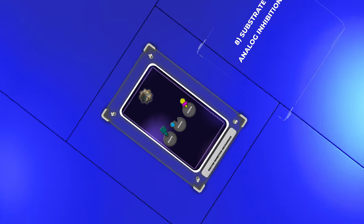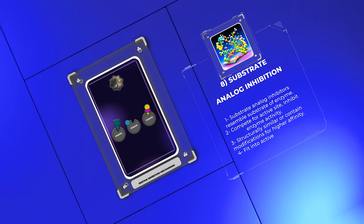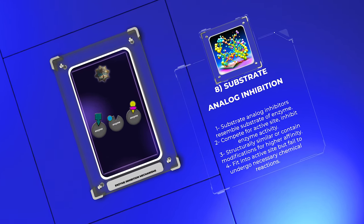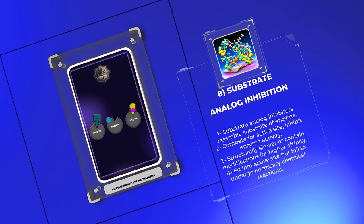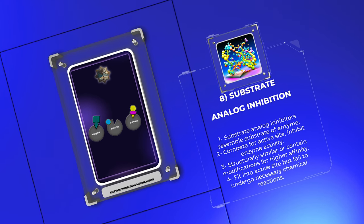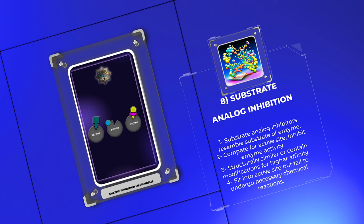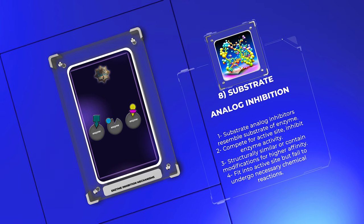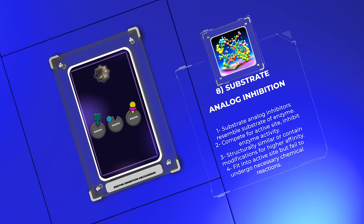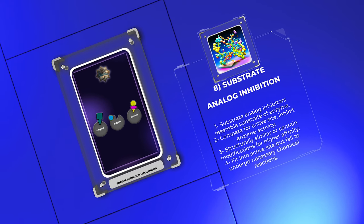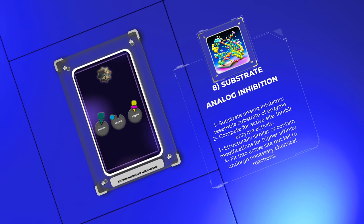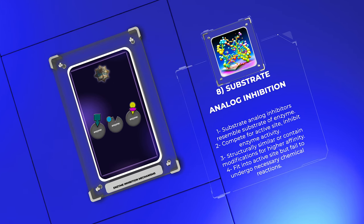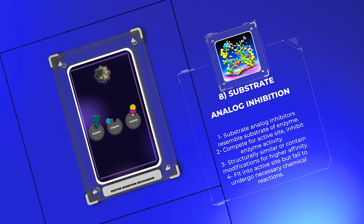Substrate analog inhibitors resemble the substrate of an enzyme and compete for the active site, thereby inhibiting the enzyme's activity. These analogs can be structurally similar to the substrate or can contain modifications that confer higher affinity for the active site. The high substrate similarity allows these inhibitors to fit into the active site but fail to undergo the necessary chemical reactions. Examples include acyclovir, an antiviral drug that inhibits viral DNA polymerase by acting as a faulty DNA nucleotide analog.